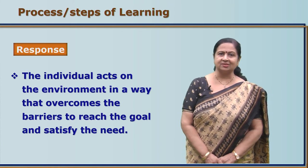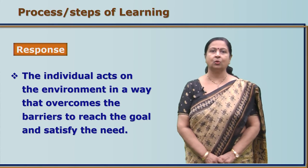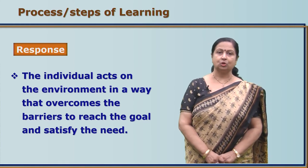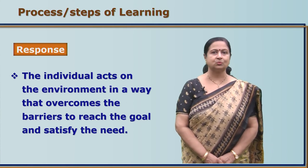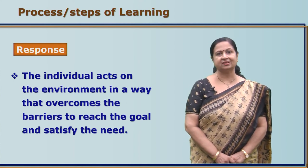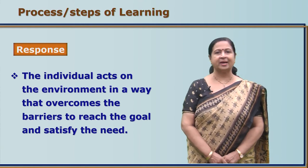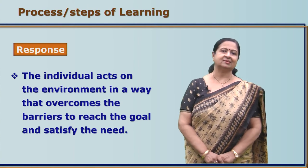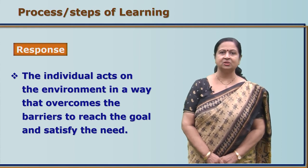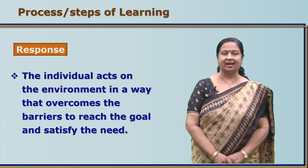The individual will try to act in such a way as to overcome the obstacles in the environment. What are the obstacles to reaching the goal? It depends on the perception of the individual. If perception is very clear, the individual knows the challenges and will exhibit behavior to overcome those barriers. But if the individual has not perceived it properly, they will exhibit behaviors which may not help them reach the goal. Only correct responses — those that help overcome the barriers — are truly learned responses. Clear perception will definitely help lessen mistakes and make the right responses.